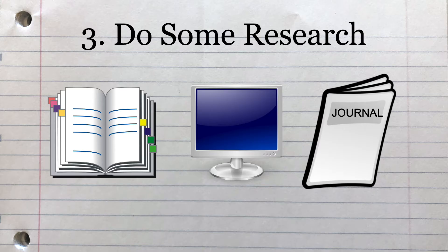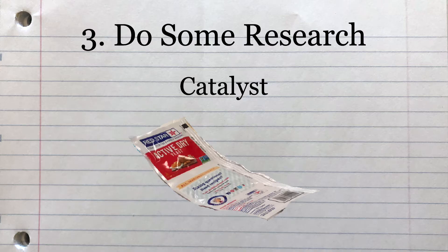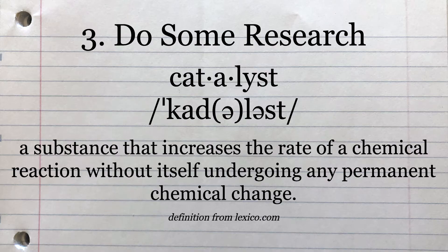Now we're going to have to do some background research to help answer our questions. It looks like if we use a catalyst, like yeast or sodium iodide, we should be able to speed up the reaction process. A catalyst is a substance used by a scientist to speed up reactions that would otherwise be very, very slow.